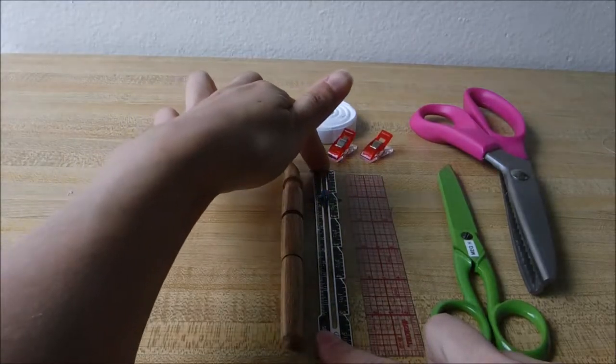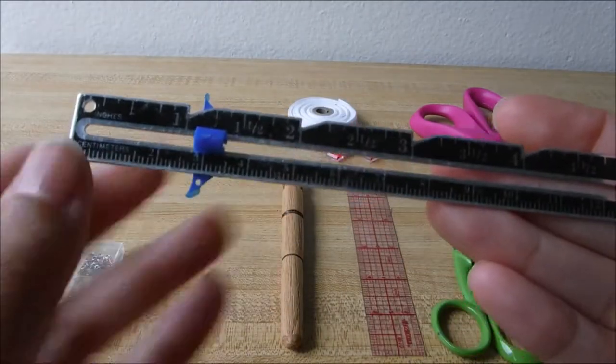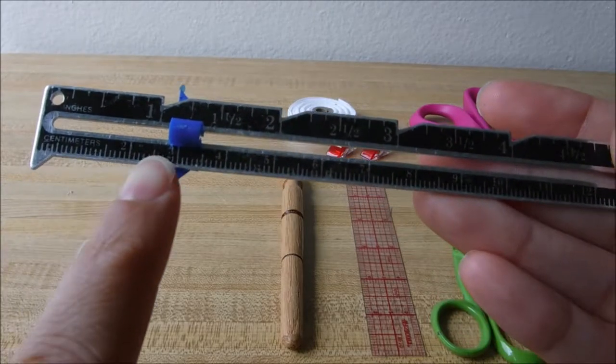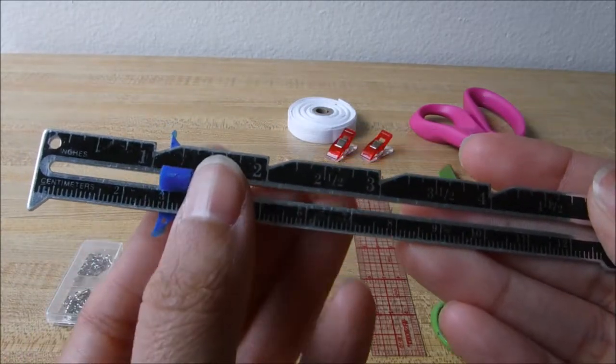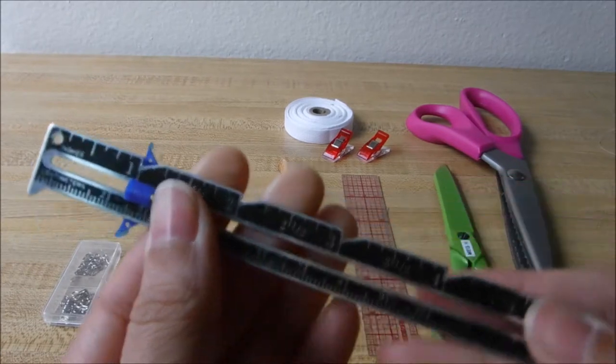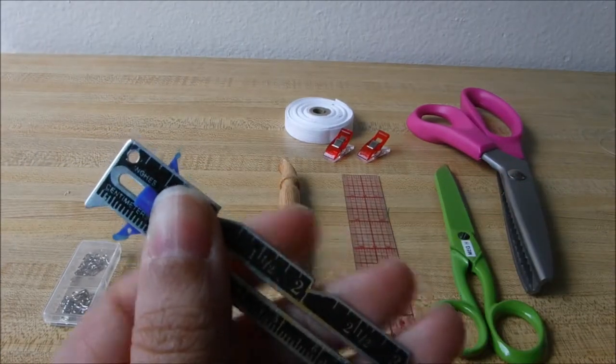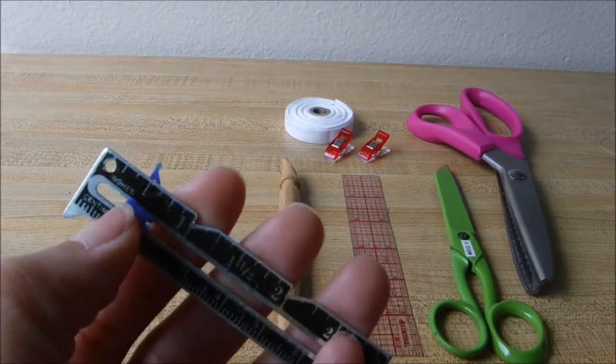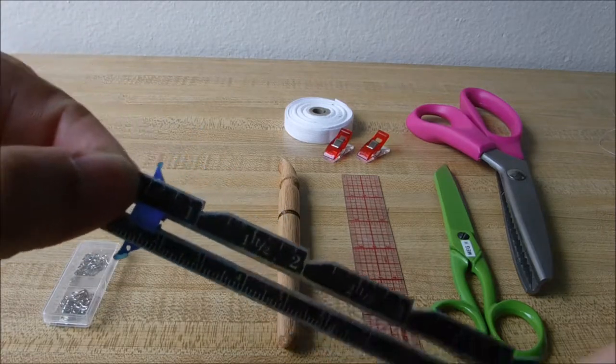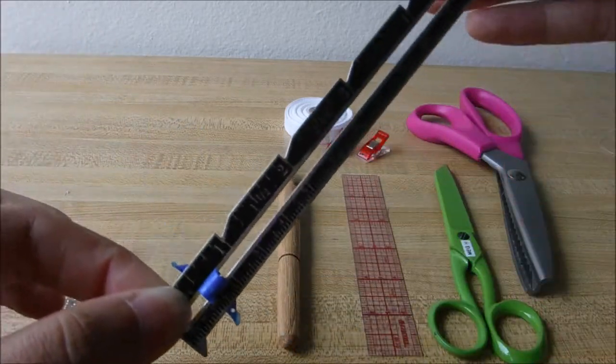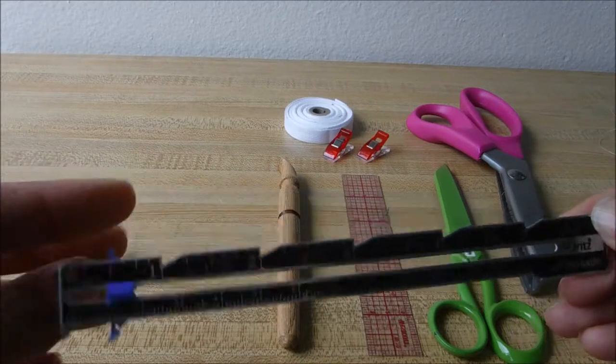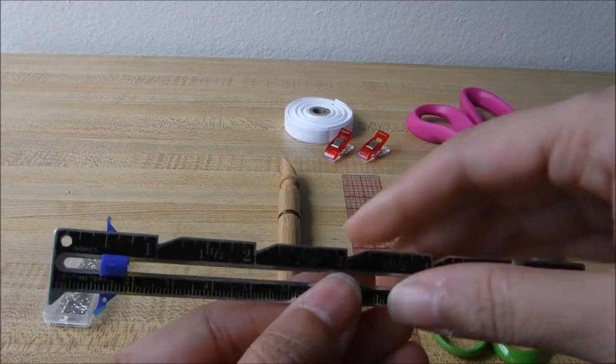A seam gauge makes life easy. It's got a sliding little marker. You can create one inch, half inch, quarter inch seams very easily and it stays put. You can also use that little hole at the top to make perfect circles by dragging your pen around that little marker. It's a really cool tool to have.